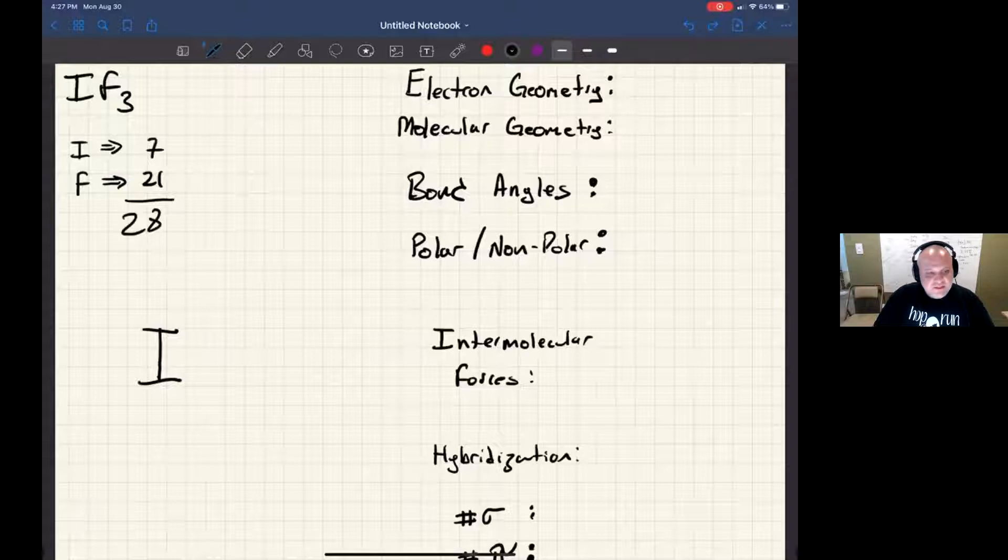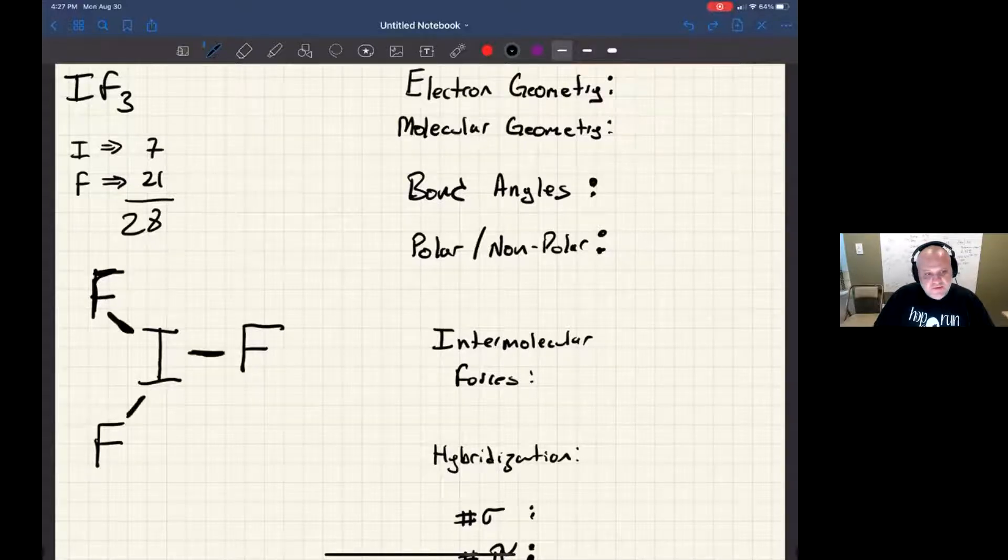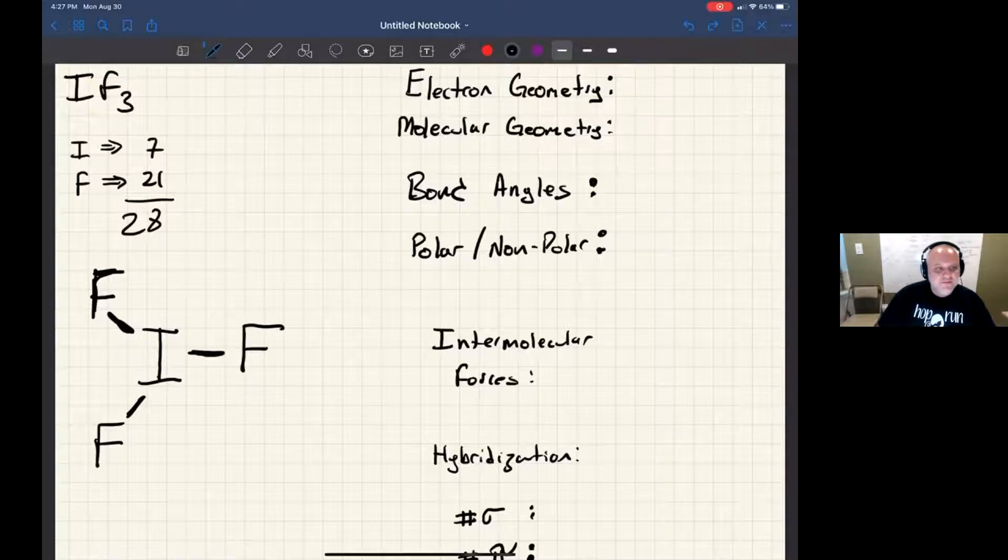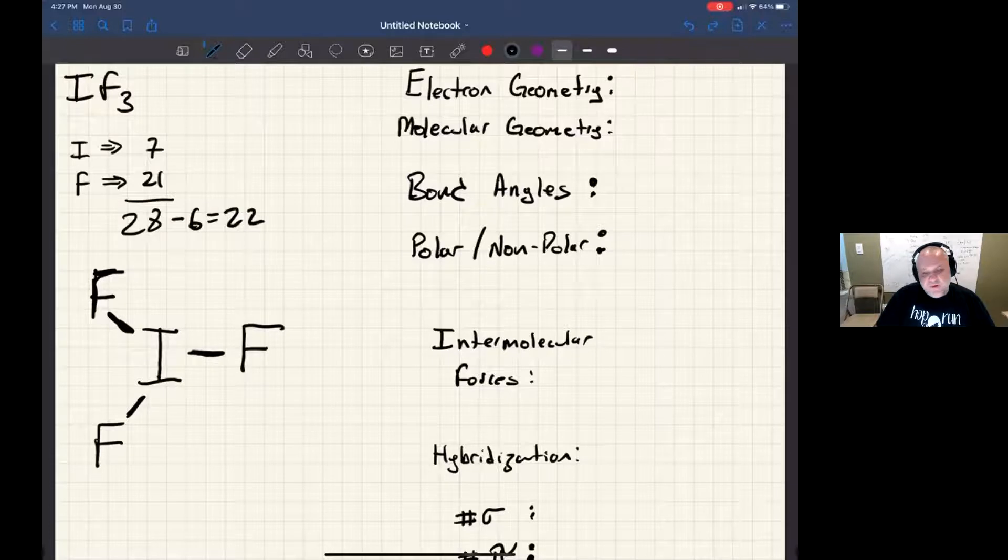So let's go ahead and arrange the atoms kind of symmetrically around the page. Once I've done that, I can start by drawing a single bond between the central atom and all the other atoms. Now I would remove those six electrons from the three bonds from my original valence electron count, and I end up back with 22 valence electrons to finish out the structure.